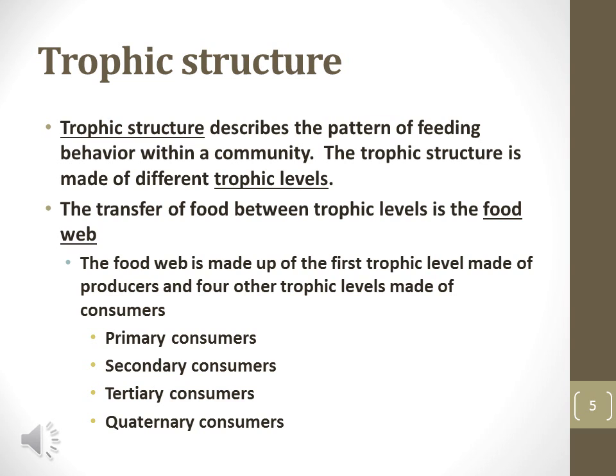Producers are autotrophic organisms that produce their own food. Primary consumers eat producers. Secondary consumers consume primary consumers, as do tertiary and quaternary consumers.